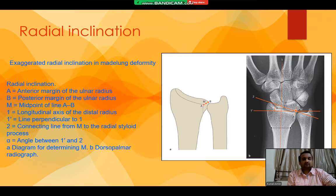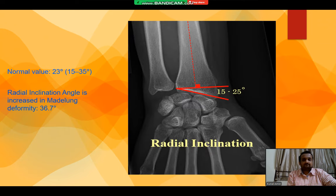Now we talk about the radial inclination. Radial inclination is exaggerated in Merlung Deformity. In this image, we see all the parameters that are used to calculate and define the radial inclination. The normal value is 23 degrees, with a range of 15 to 35 degrees. Radial inclination angle is increased in Merlung Deformity to 36.7 degrees or higher.